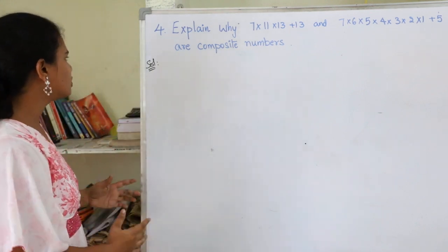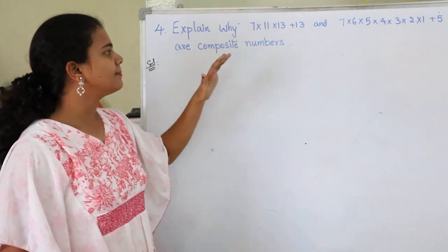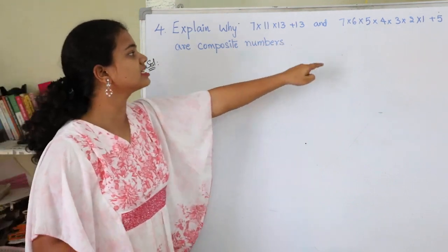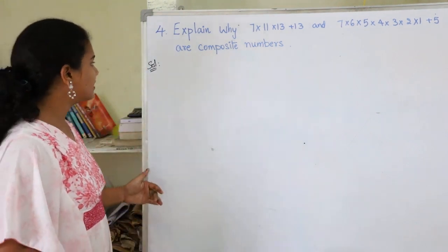Hey guys, let's start with the fourth question. Explain why 7 × 11 × 13 + 13 and 7 × 6 × 5 × 4 × 3 × 2 × 1 + 5 are composite numbers.